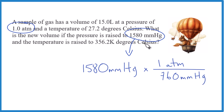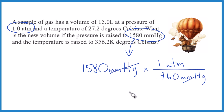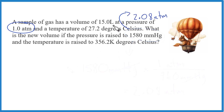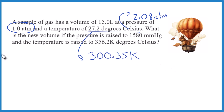Let's convert the mmHg to atmospheres. We divide by 760 mmHg because one atmosphere equals 760 mmHg — that's the conversion factor. Multiply, the mmHg cancels out, and we get 2.08 atmospheres. Now the pressure units match. For temperature, since it's in Celsius, we add 273.15 to get Kelvin. Now all the units are the same, which is really important.